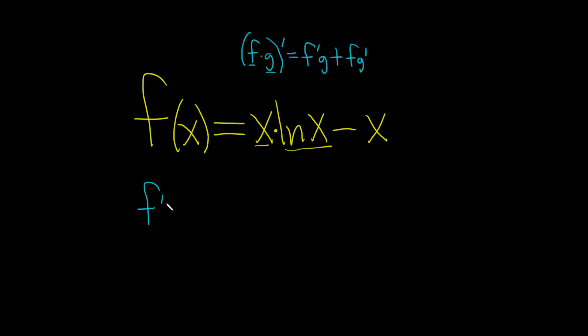So let's use it here in this problem. So x is our first and ln x is our second. So it's the derivative of x, which is 1, times the second plus the first, which is x, times the derivative of the second. And the derivative of ln x is just 1 over x. Then minus, and then the derivative of x is 1.